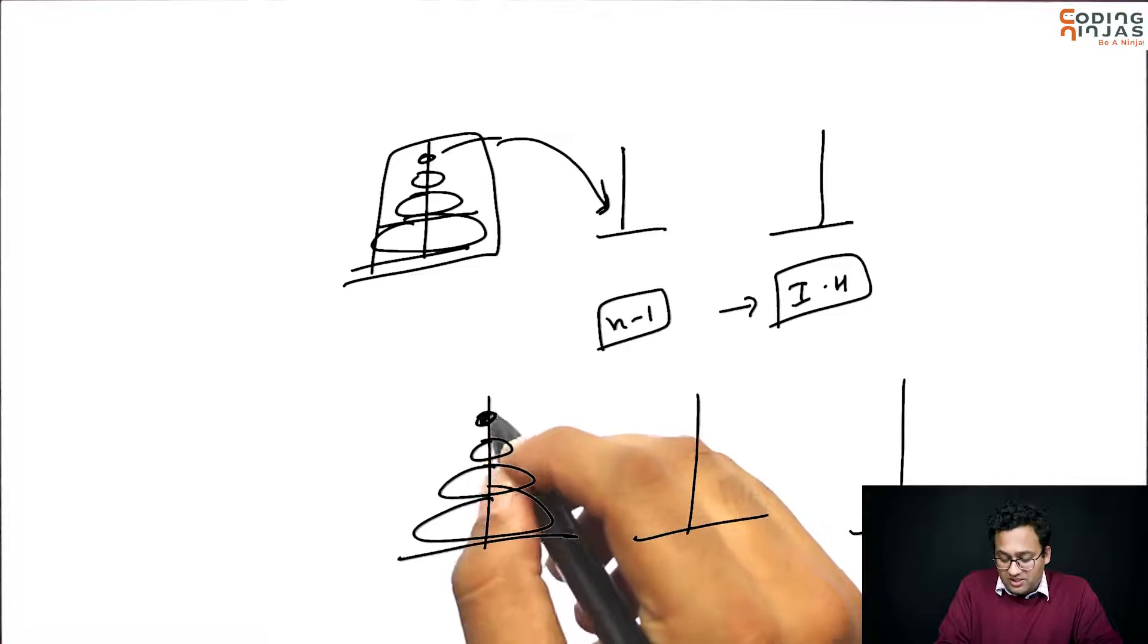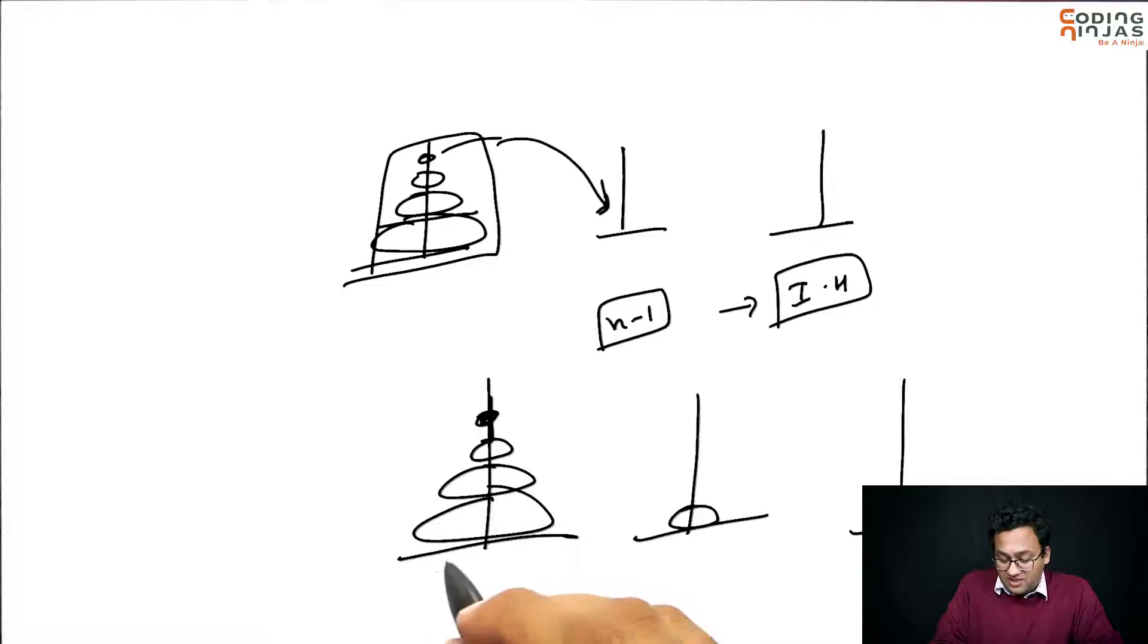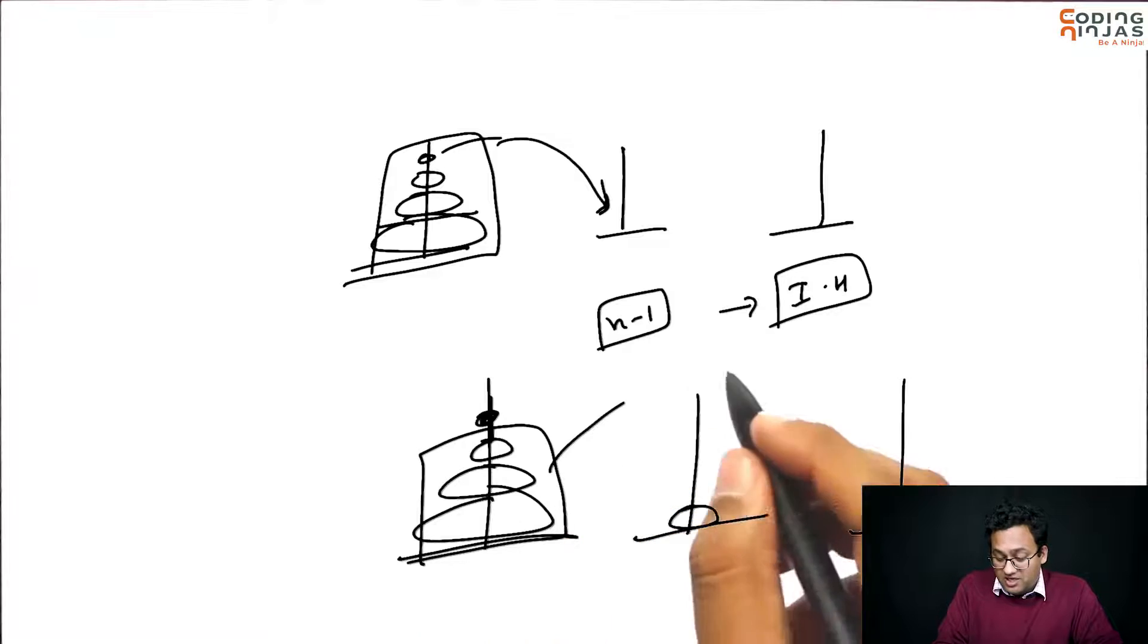So, one solution a lot of people give is: Hey, why don't you move the smallest disk here? Right? Or let's say the smallest disk here. Now, you know how to move n minus 1.